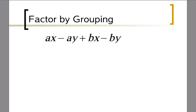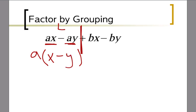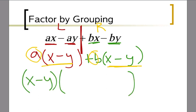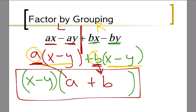Let's do another example. Again, the first step is to cut it down the middle. The first two terms on the left both have an a in common, so I pull out the a and I'm left with x minus y. The second two terms both have a b in common, so I pull out a b and I'm left with x minus y. Now both groups have x minus y in common. The first step on each side was to pull out a monomial, and now I pull out the binomial x minus y, leaving a plus b. So the final answer is x minus y times a plus b.